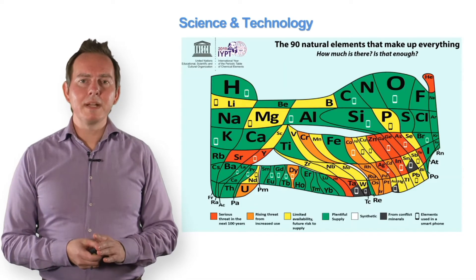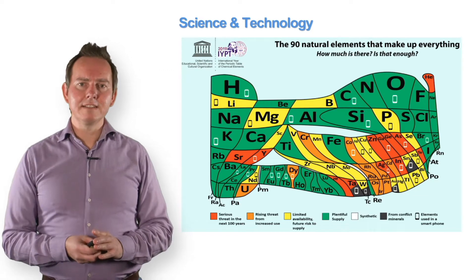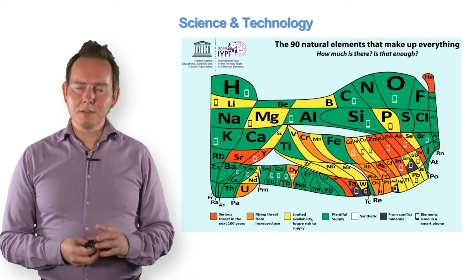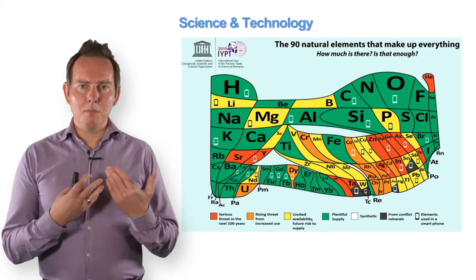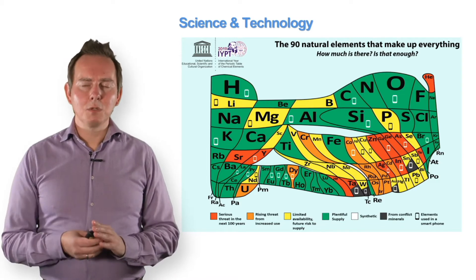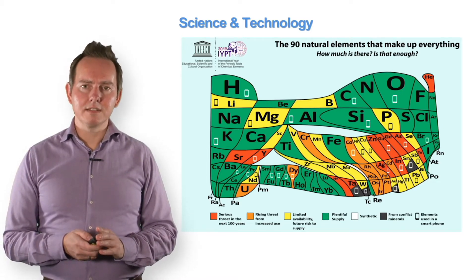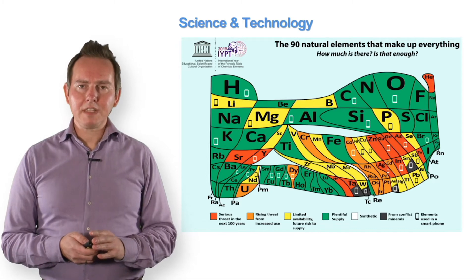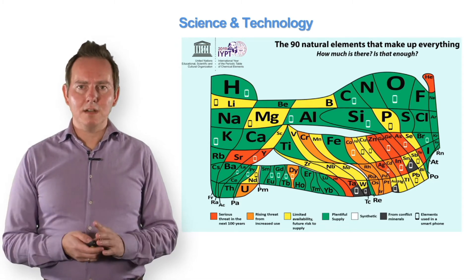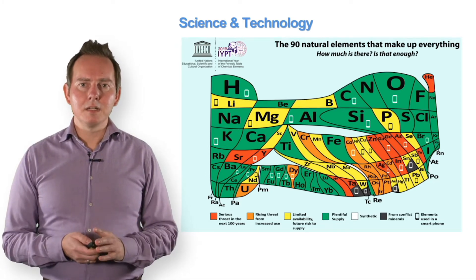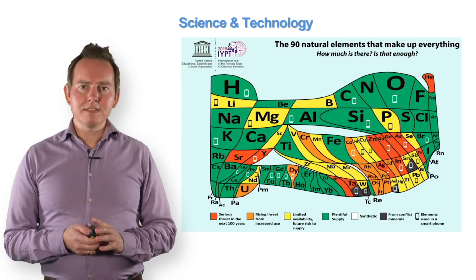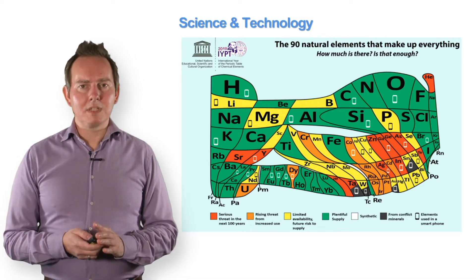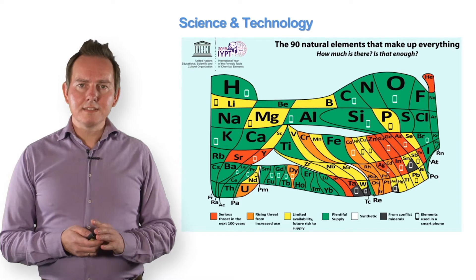There are many more elements, and depicted here is a special periodic table that also highlights the amounts — the quantities of these elements that are available on our planet Earth. Carbon, nitrogen, and oxygen are abundant, but other elements, for example phosphorus or helium, are much less abundant.